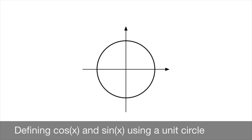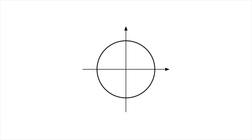We now define both the cosine function and the sine function using a unit circle. A unit circle is a circle centered at the origin of a Cartesian grid. The origin has coordinates (0,0), and we usually refer to it with the letter O. Furthermore, a unit circle has a radius equal to one unit. Since the radius equals one, this circle will cut the horizontal axis at the values one and negative one, and similarly, it will cut the vertical axis at one and negative one.